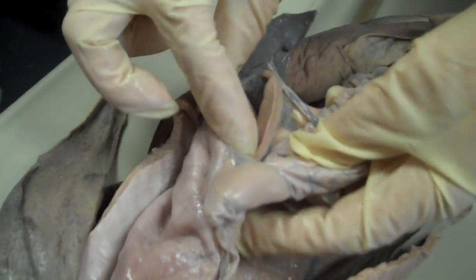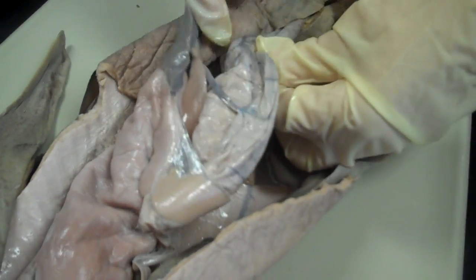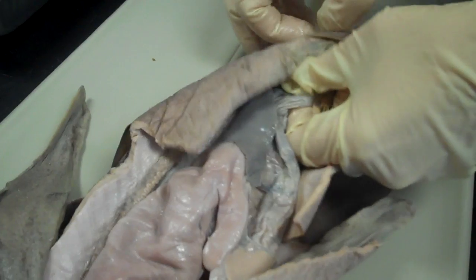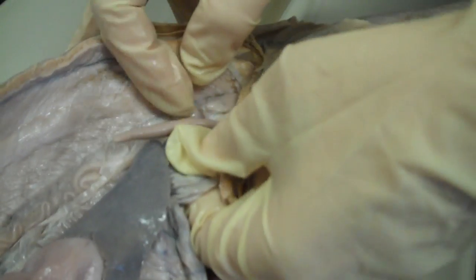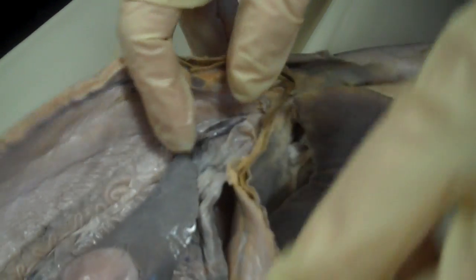There's two lobes, this round one here and this long one in between. Follow the spiral intestine down to the bottom, and this would be the rectum. Right beside it is the rectal gland that maintains salt balance for the fish.